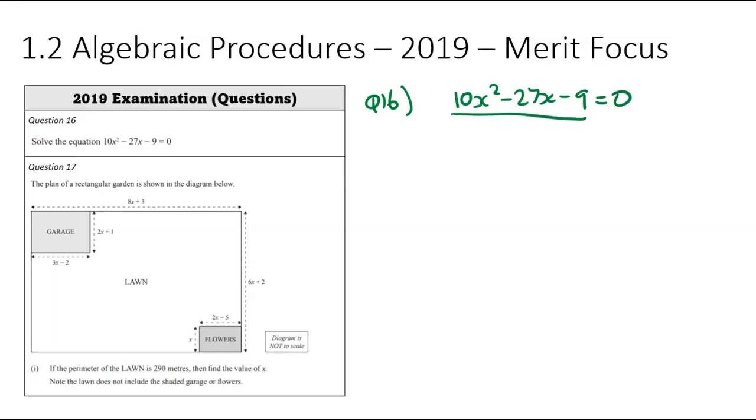There's no common factors across here. And I can see the number there. So I'm going to be using the grouping method by multiplying it over here. So 10 times negative 9 equals negative 90. So I now need to think what multiplies to negative 90 adds to negative 27. And hopefully you're getting the same number as me, but I'm getting negative 30 and positive 3. They add to negative 27. They multiply to negative 90.